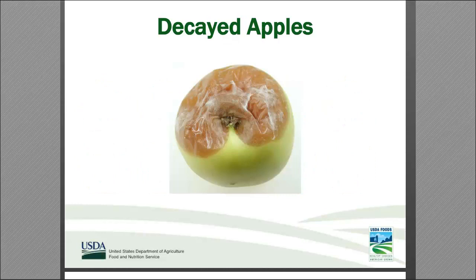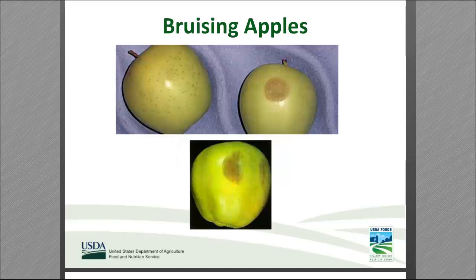Here is a photo of a decayed apple. As you can see, this decay has progressed and is getting advanced. This is what happens as the fruit continues to ripen — it will just start to decompose. Bruising is a very common defect. You are looking for bruising larger than a quarter. If there are more than one area that is bruised, that is scorable. You also want to check how deep the bruise is.